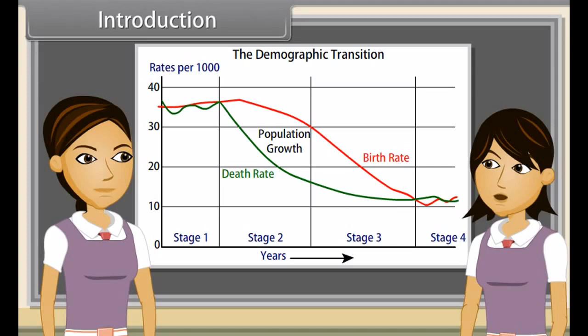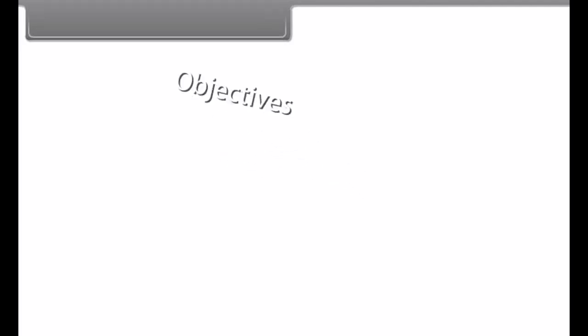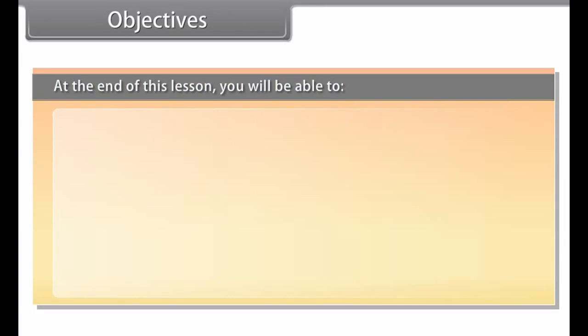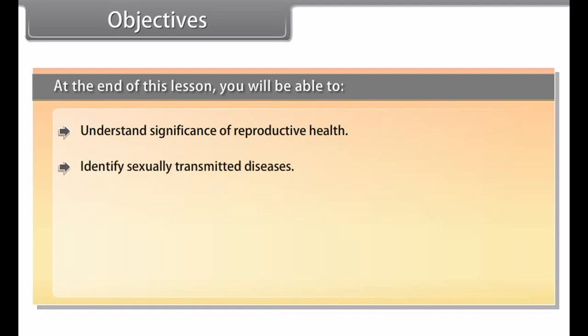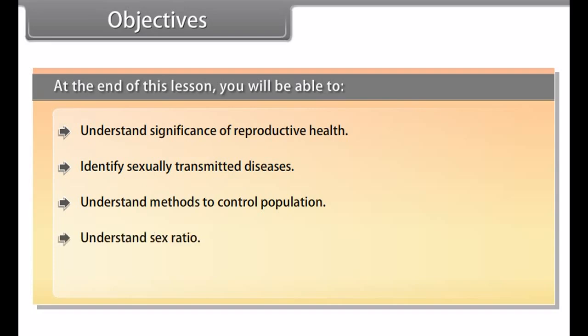Population explosion is mainly due to rapid decline in death rate and increase in lifespan. At the end of this lesson, you will be able to: understand the significance of reproductive health, identify sexually transmitted diseases, understand methods to control population, understand sex ratio, and identify population size.